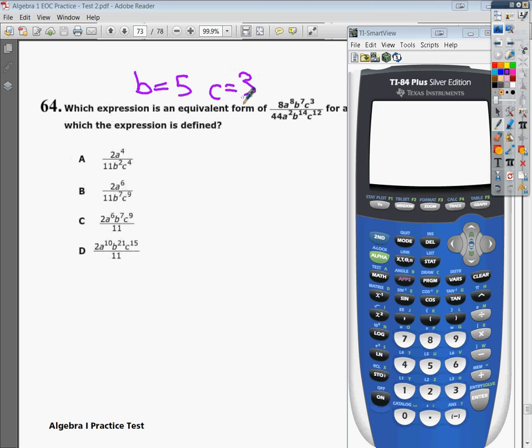And I just picked those at random. You can make them whatever you want, as long as it's easy to deal with. So what I'm going to do is type the numerator in, in a parenthesis. So I'm going to hit 8. And where instead of A, I'm going to put X to the 8th power times. And remember, B is going to be 5 here. So I'm going to do 5 to the 7th power times. And then C is 3, so 3 to the 3rd power. That's the numerator.